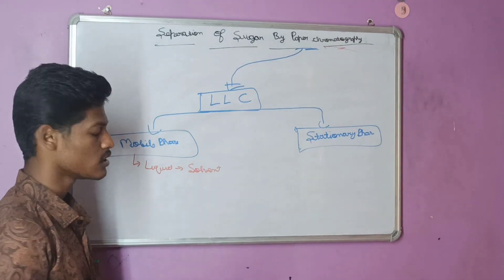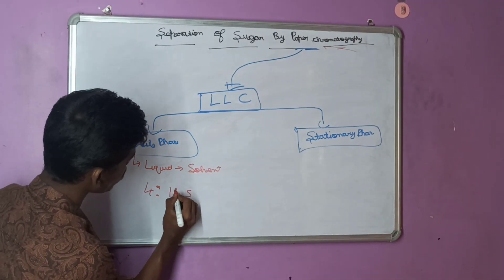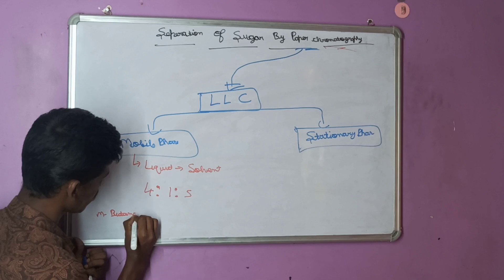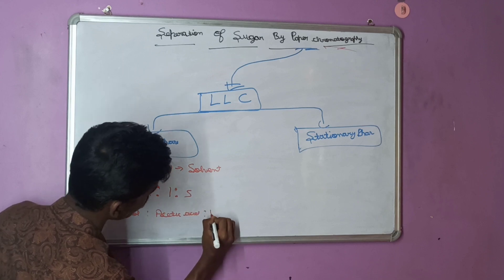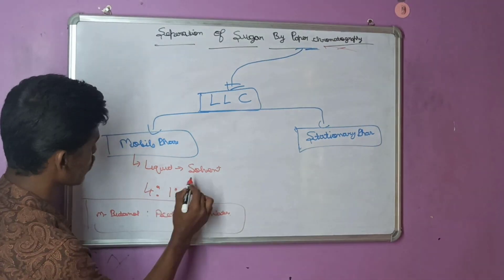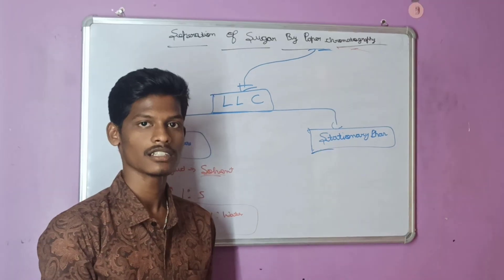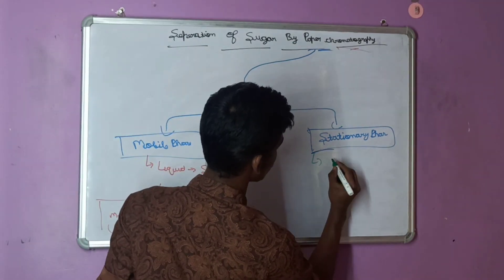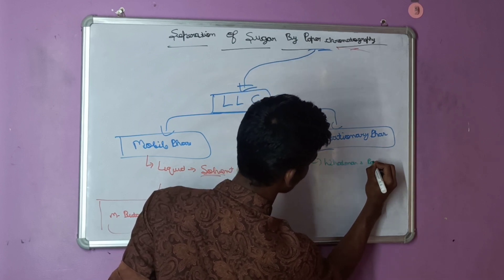The mobile phase used here is a liquid solvent. The solvent is prepared in the ratio of 4:1:5, where the components are n-butanol, acetic acid, and water. So using n-butanol, acetic acid, and water, the solvent is prepared in the ratio of 4:1:5. This is the mobile phase. Now, the stationary phase uses Whatman's paper.